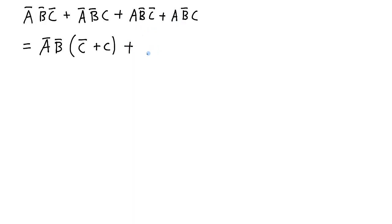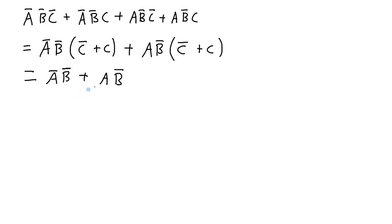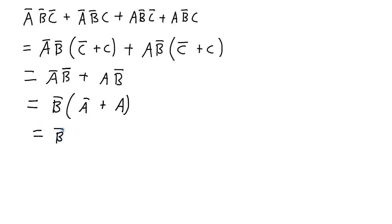Over here I have a common a·NOT b expression, so I'll factor that out. a·NOT b factored out of the first term, factored out of this term leaves me NOT c, and factored out of this term leaves me c. NOT c ORed with c gives me one, so that part goes away and I have a·NOT b. Now I could do some more factoring: I have NOT b in this term and NOT b in this term, so I'll factor that NOT b out. I get NOT a ORed with a, and NOT a ORed with a — something ORed with its inverse — will leave me with one. So that will be NOT b AND one, which is simply equal to NOT b.